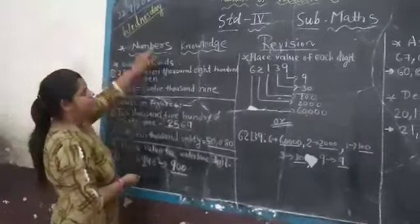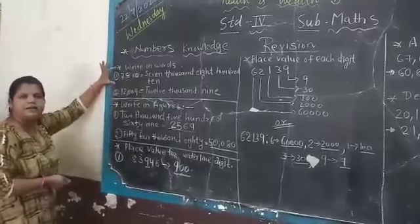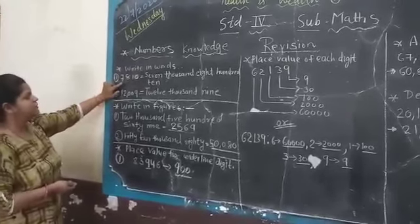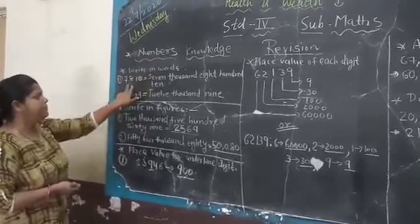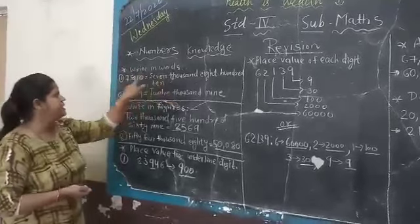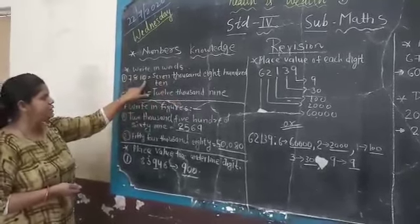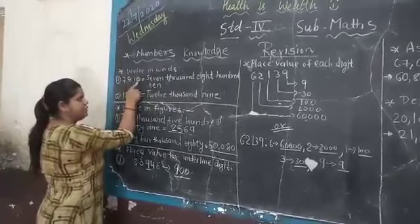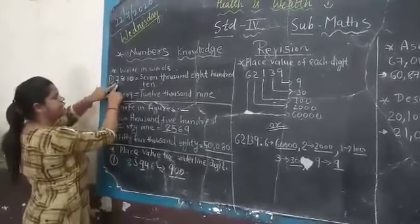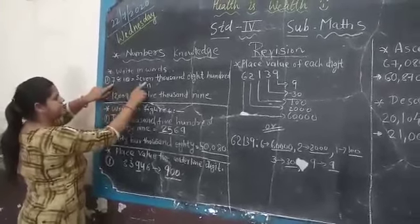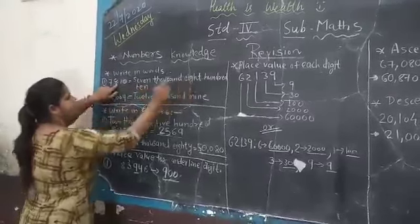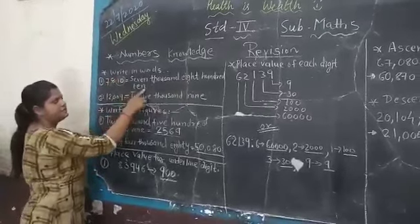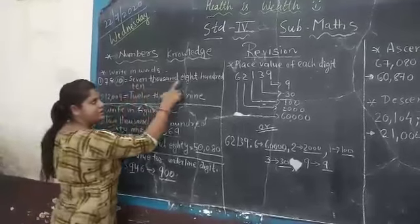First we revise the numbers now. We learn in this standard 4-digit numbers and 5-digit numbers. The first one, write in words. In numbers is given in figures and you have to write in words. 7, 8, 1, 0. How will you write in words? First of all you check its place. It is unit, tens, hundreds and thousands. How many thousands are there? 7,800, and it takes tens and units together. So 1, 0 means 10. So our number becomes 7,810.